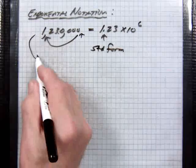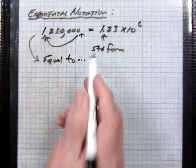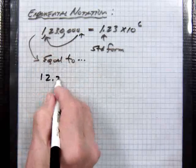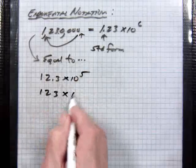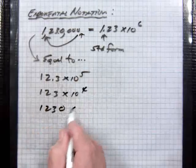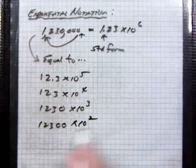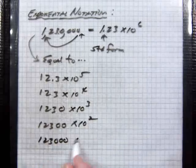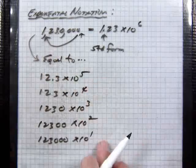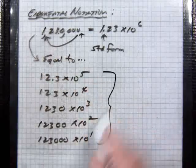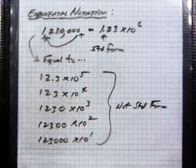But this number is also equal to 12.3 times 10 to the fifth, or 123 times 10 to the fourth, or 1,230 times 10 to the third, and so forth. But these are not, of course, standard forms. So kind of keep that in mind.